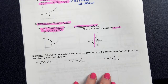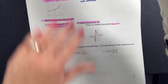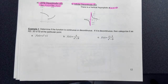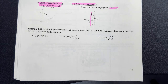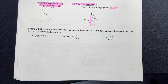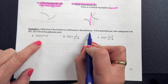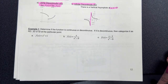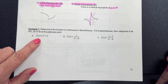When you're asked about continuity, you always start by looking at the domain. If the domain is all real numbers, then you know there's no place where it's discontinuous. Unless you have a piecewise function, you need to check for jumps. For example: determine if the function is continuous or discontinuous, and if discontinuous, categorize it as removable, jump, or infinite.